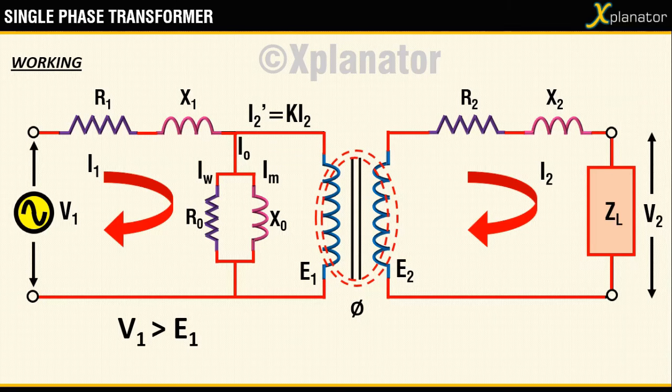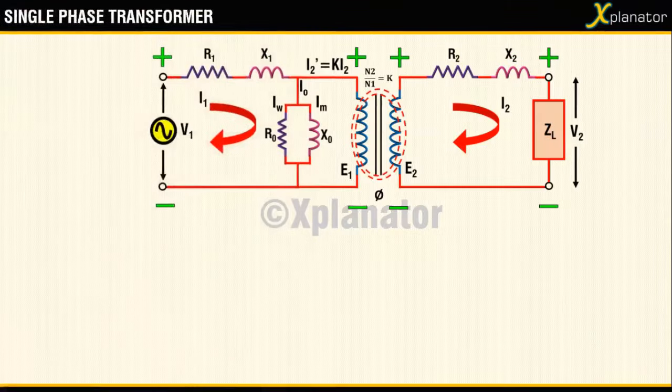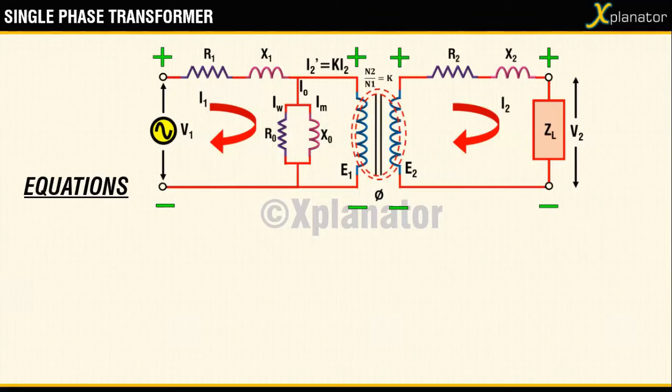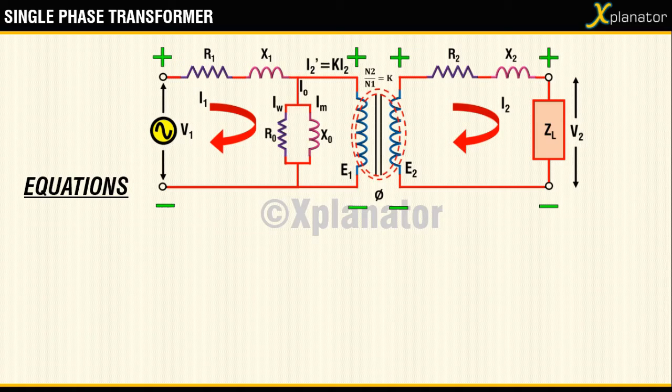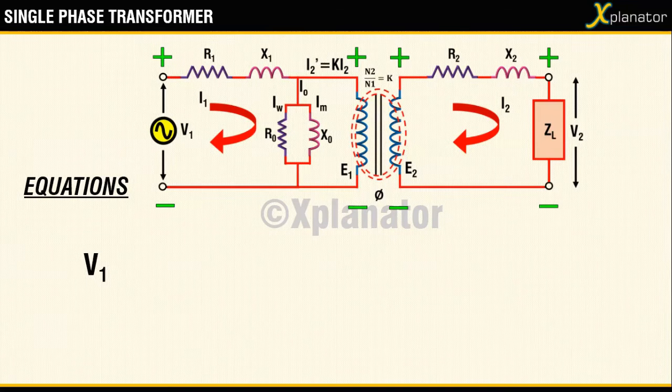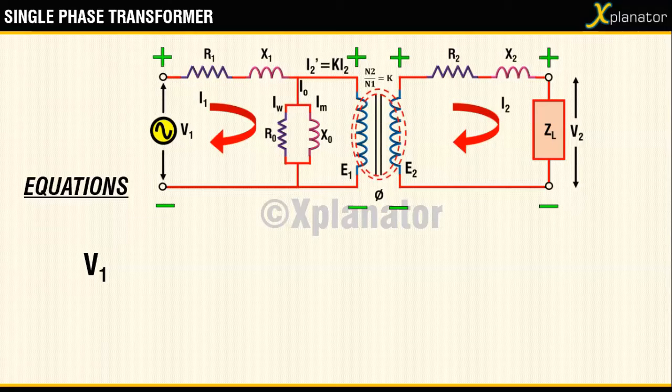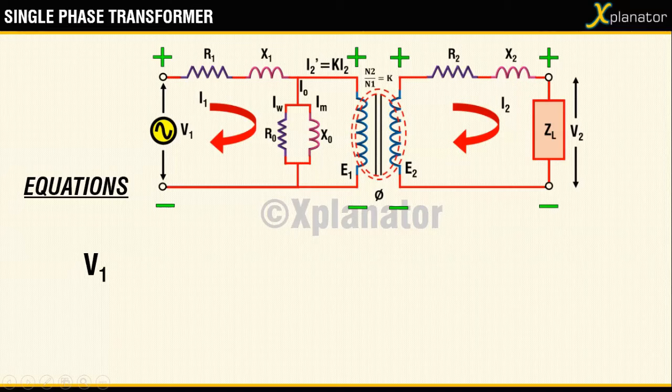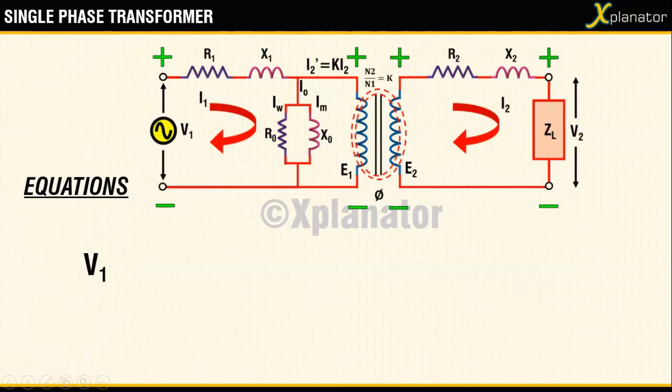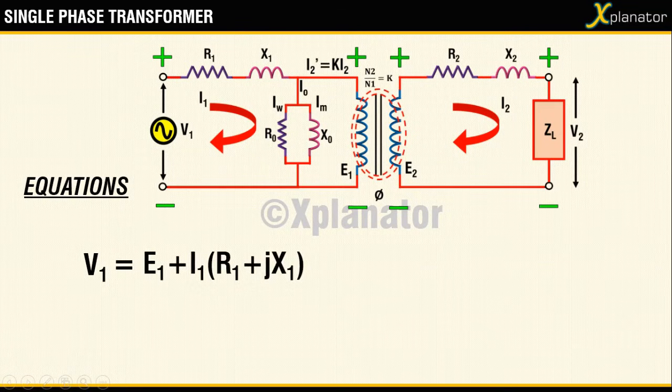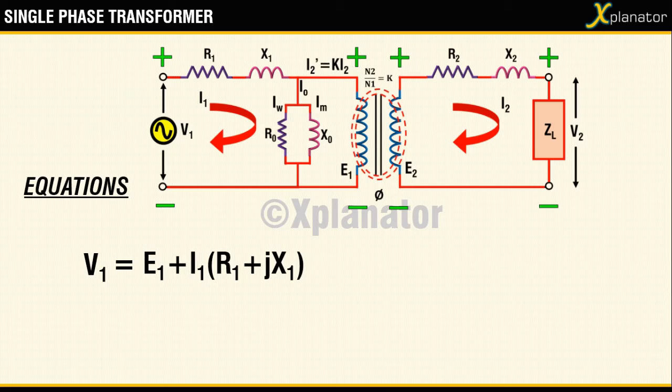Considering these parameters we can write the equations for input voltage V1 and output voltage drop V2. The input voltage in the primary circuit, that is V1, has to overcome the back emf E1 as well as the voltage drop across R1 and X1. So the equation may be written as V1 equal to E1 plus I1 into R1 plus J times X1.